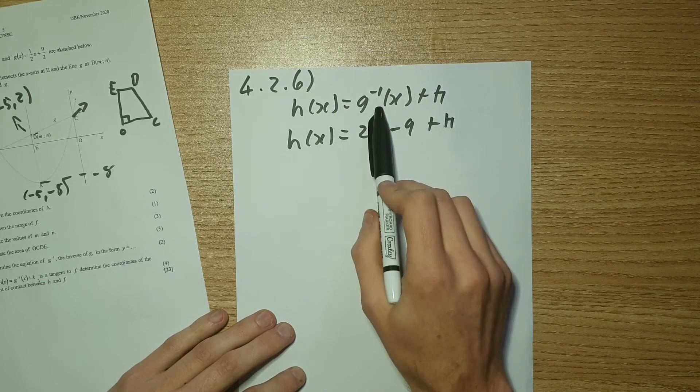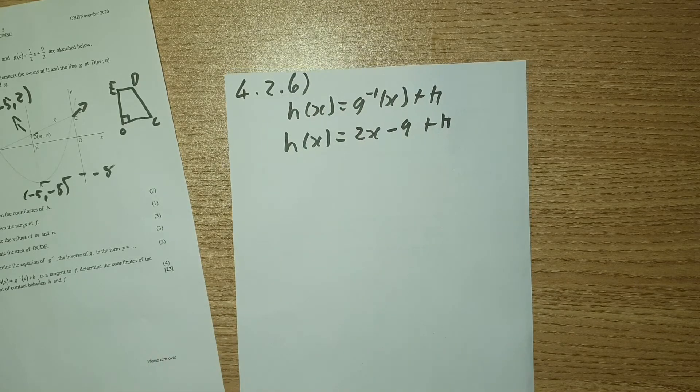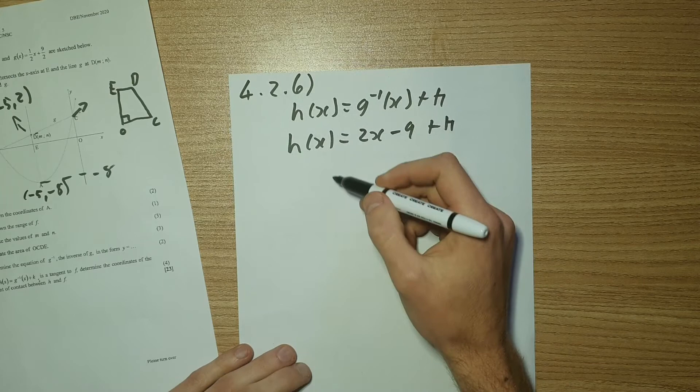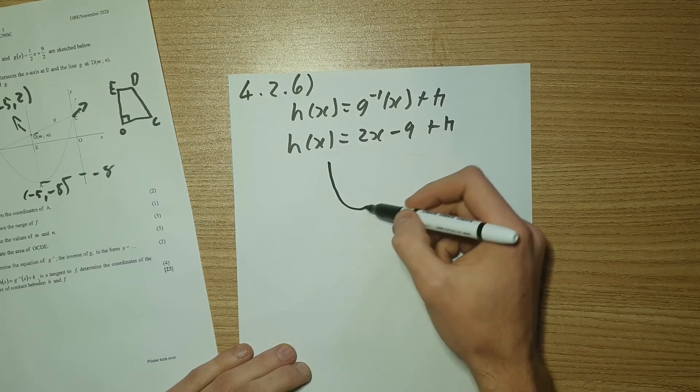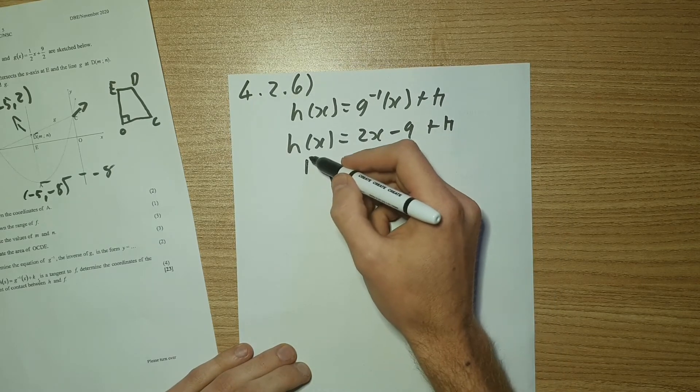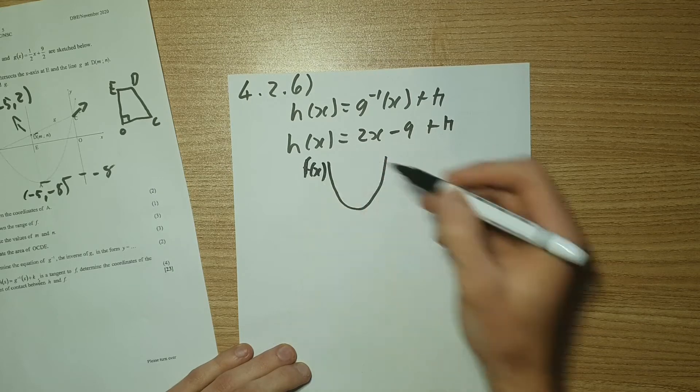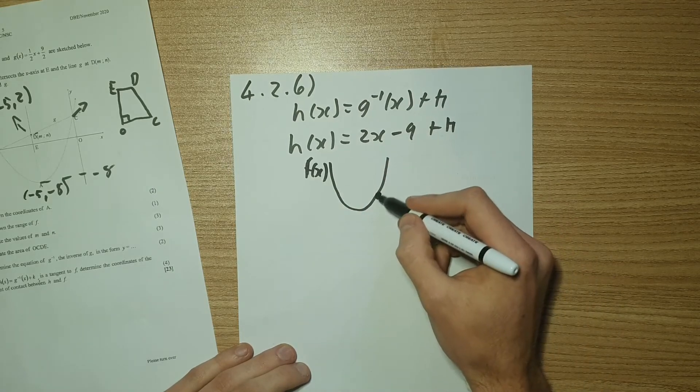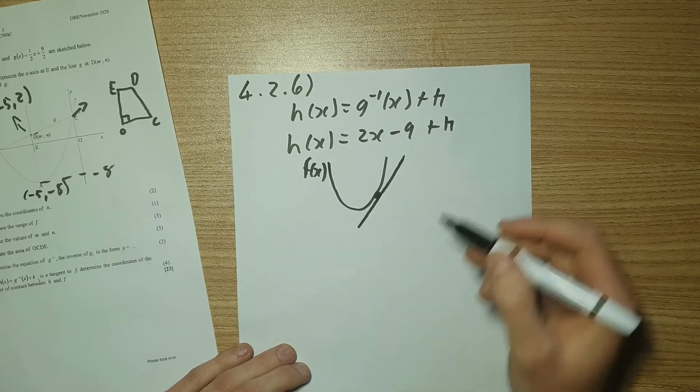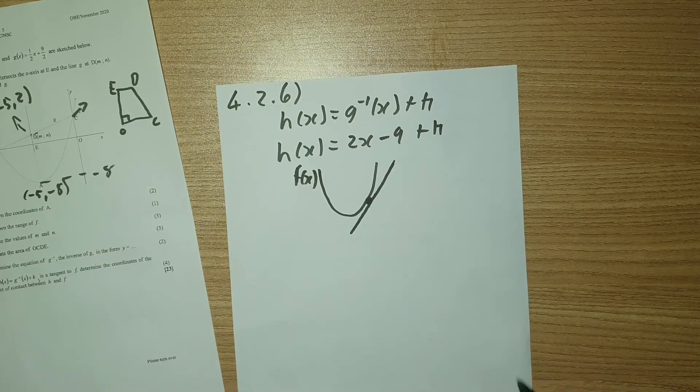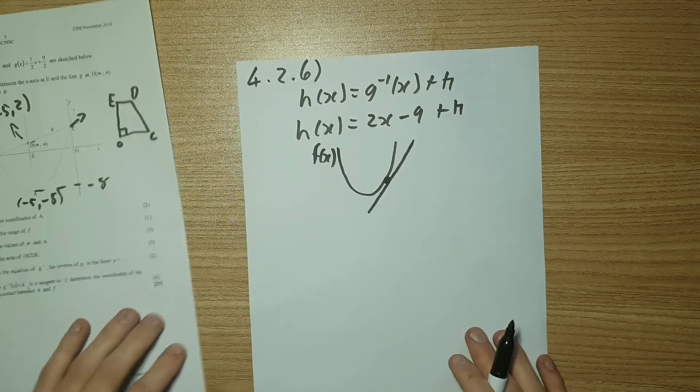So what it's saying is, here's F of X. Now at some point, I'm going to say this point here, I have a tangent line.